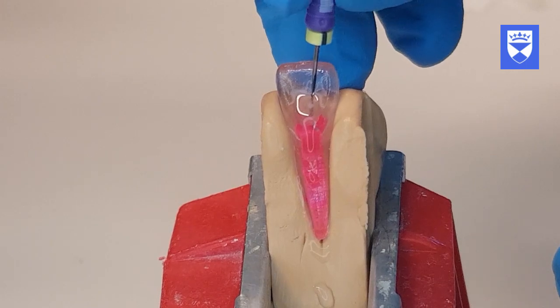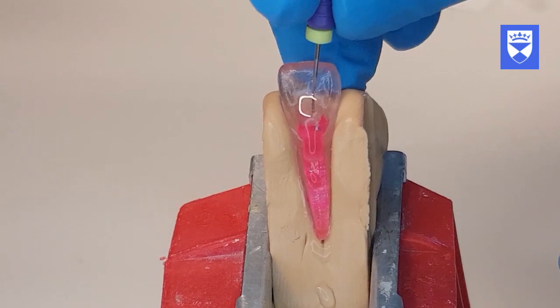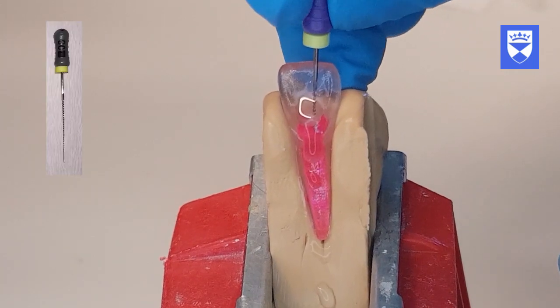Passively negotiate the canal with the flexor file up to the estimated working length. If resistance is felt, it may be an indication to drop down to a smaller size of flexor file.